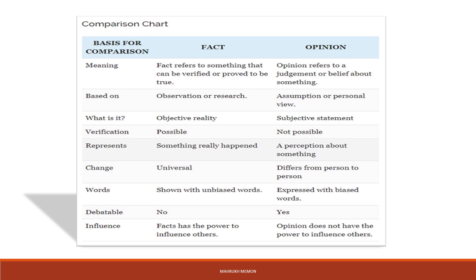Facts are universal. If a fact is true — for example, the sky is blue — that would be true for me, for you, and for everyone else. But when we talk about opinions, they differ from person to person. My opinion might be different from your opinion, and everyone in the class may have a different opinion, so opinions are not universal.